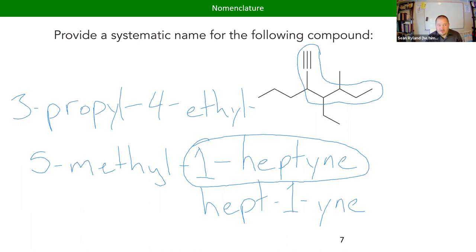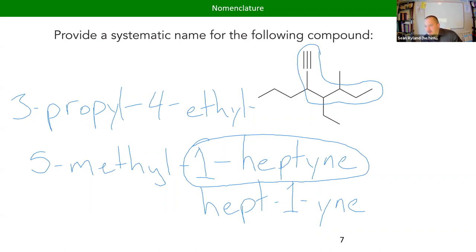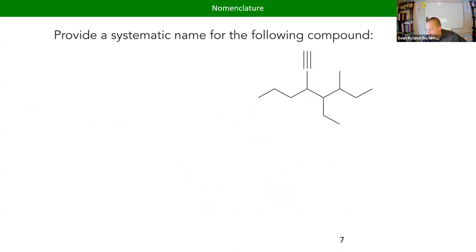That's still the standard with alkynes. There might be a rule that says if it's on carbon one you don't need to specify, but generally for all these functional groups we indicate position with a one. You don't need to specify it if it's in a ring structure — like cyclohexene, you don't have to say 1-cyclohexene, because wherever it is in the ring structure, that is carbon one and carbon two. That is the one exception.